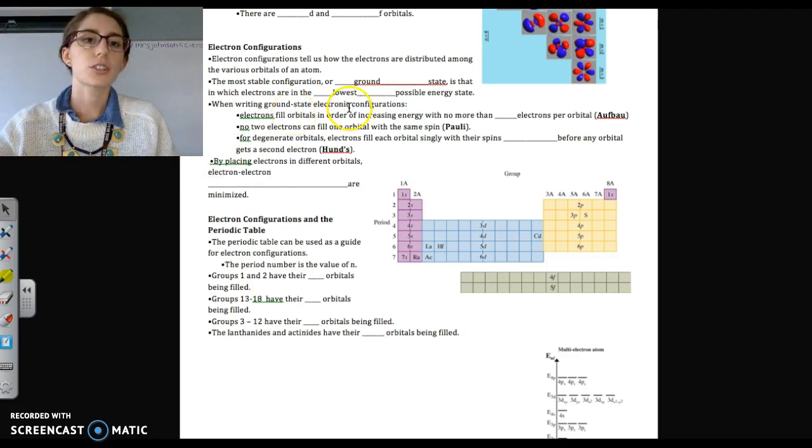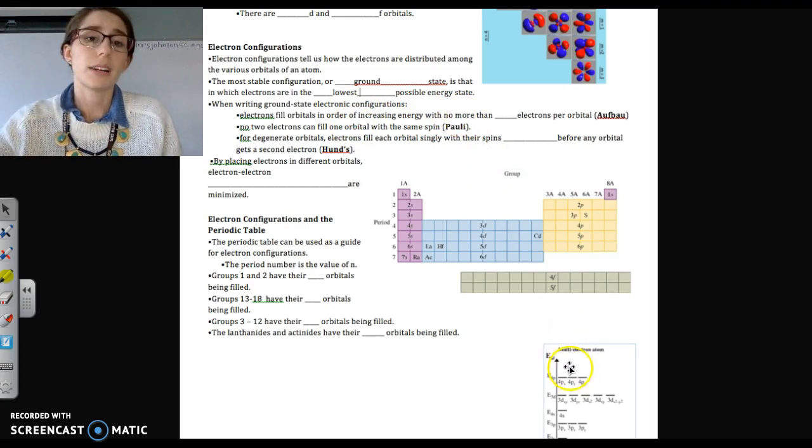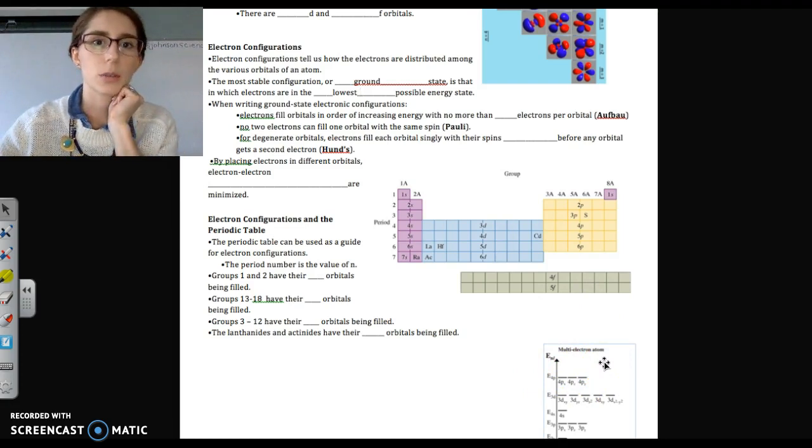So when we start to actually write electron configurations, remember, we use our, I use an aufbau diagram to start. That's what's down here and what we looked at previously. You won't get that obviously on a test or a quiz. But start off, for those of you who are new, by using an aufbau diagram.